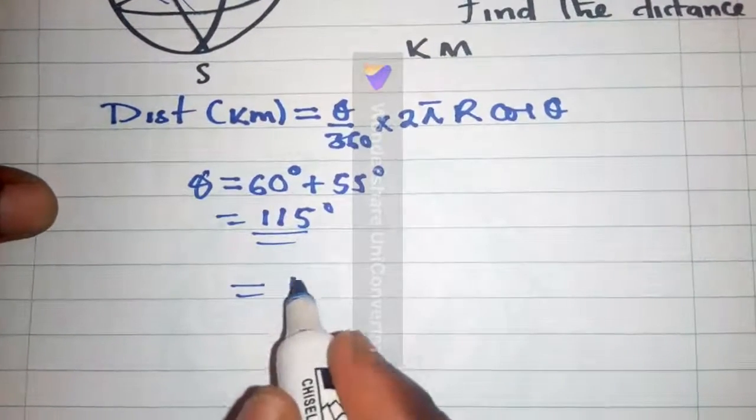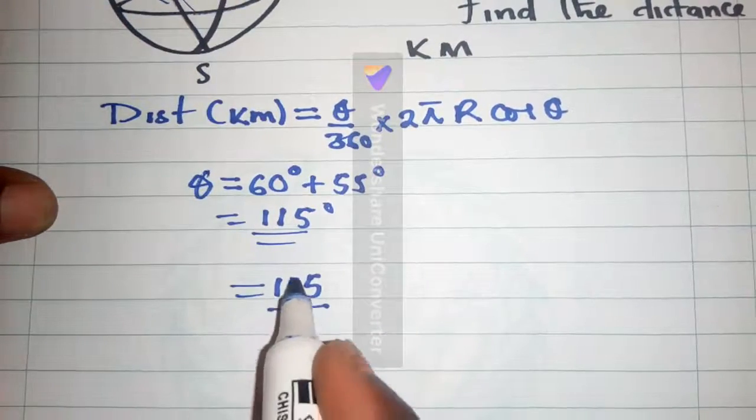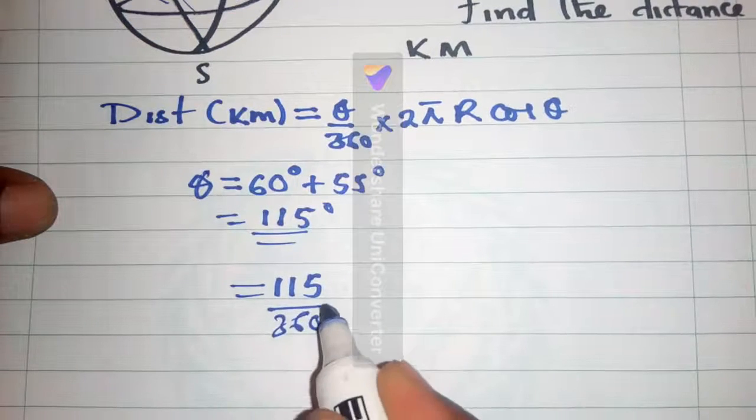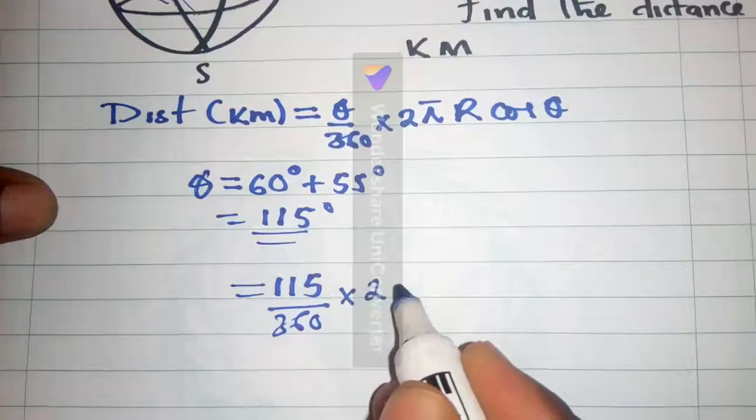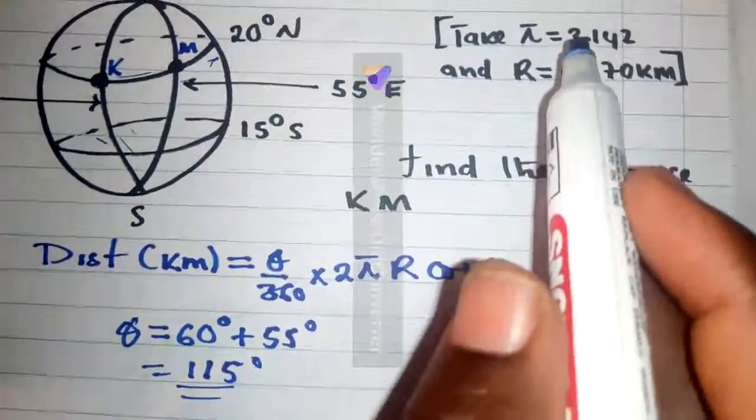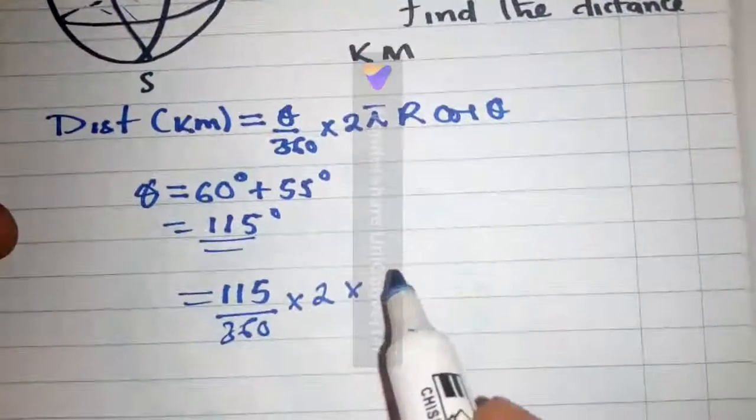So, it will be theta. We put it in our formula. Theta, which is 115 degrees over 360 degrees times 2 times pi, we have been given. The pi is 3.142.